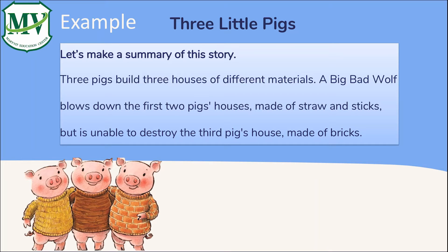Let's summarize the story of the Three Little Pigs. The main characters are three pigs and a big bad wolf. Three pigs build three houses of different materials. A big bad wolf blows down the first two pigs' houses made of straw and sticks, but is unable to destroy the third pig's house made of bricks. See, it is not difficult.